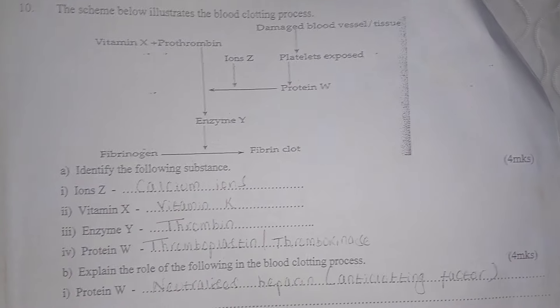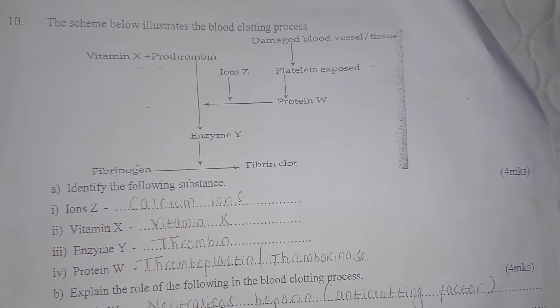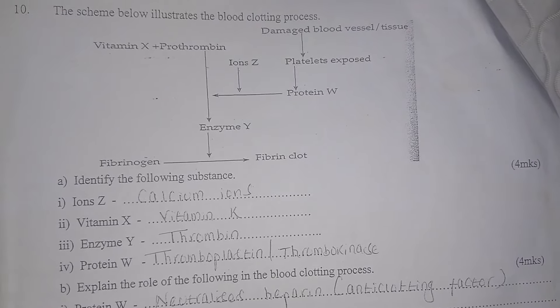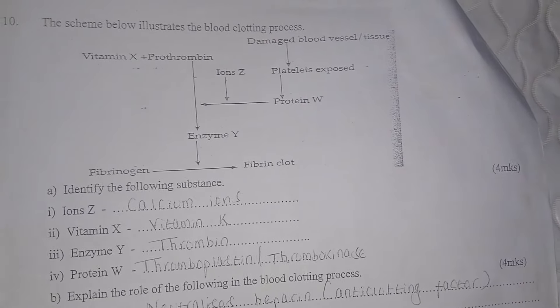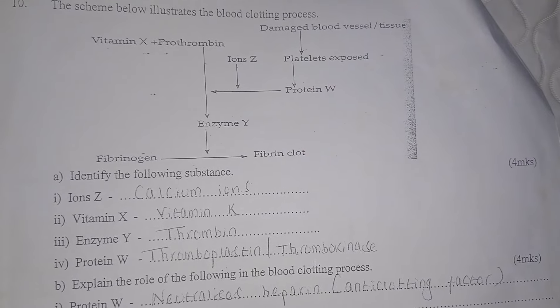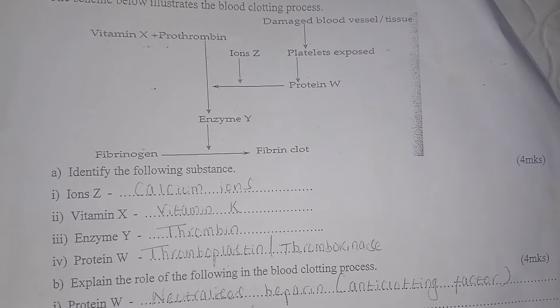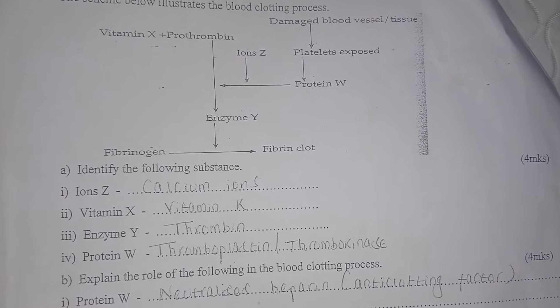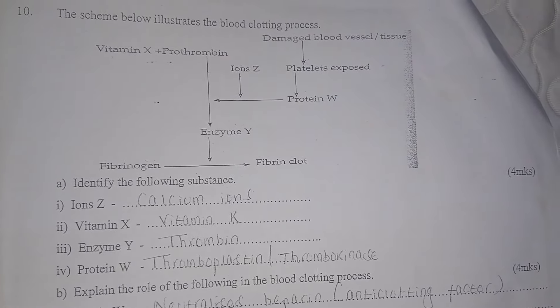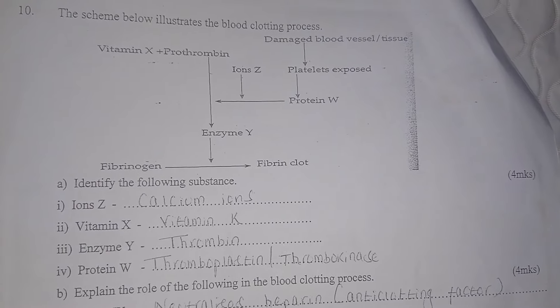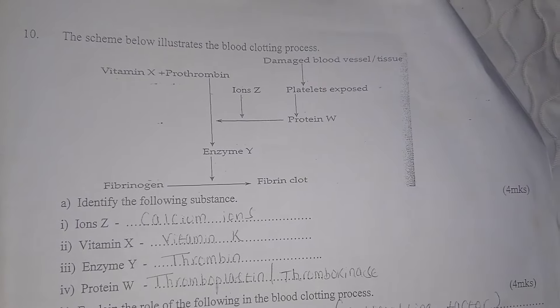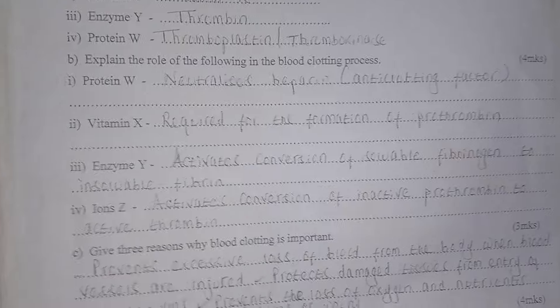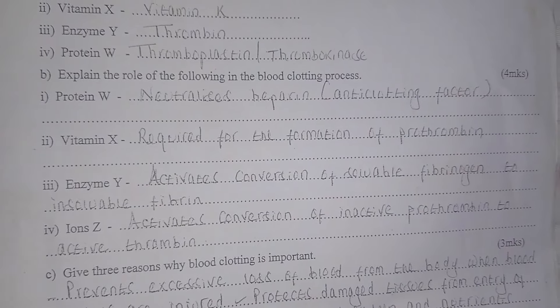Diseases that affect the circulatory system in humans include thrombosis, arteriosclerosis, and varicose veins. A scheme shows the blood clotting process. Identify the following substances: ions Z — calcium ions; vitamin X — vitamin K; enzyme Y — thrombin; protein W — thromboplastin or thrombokinase.